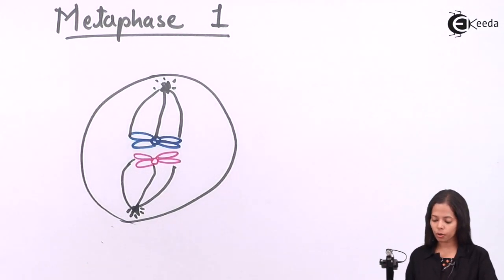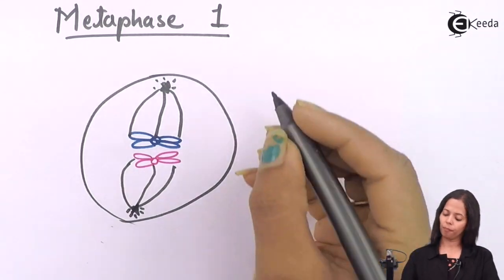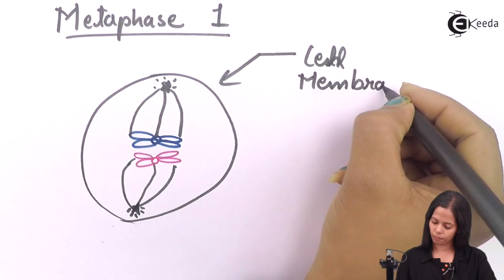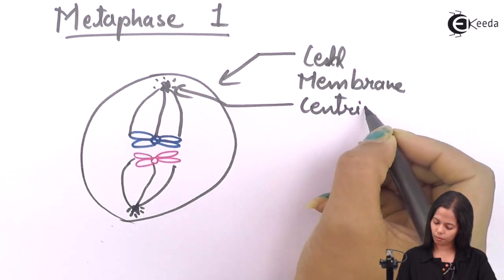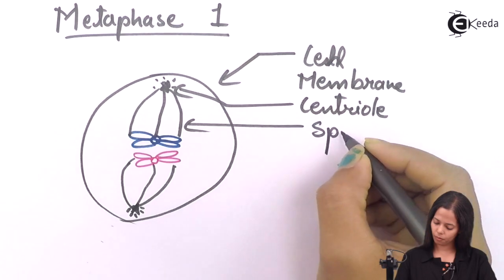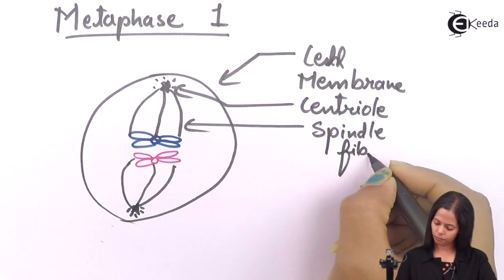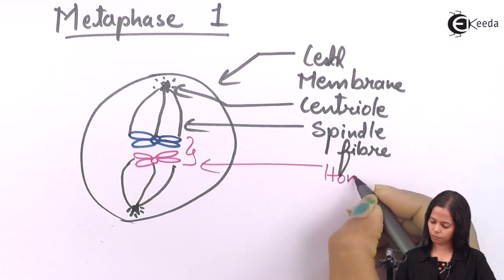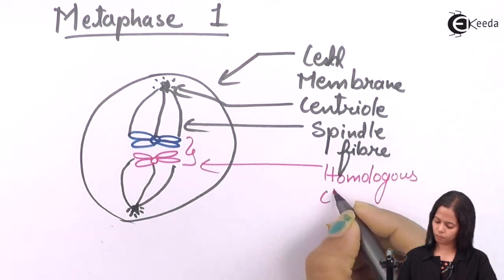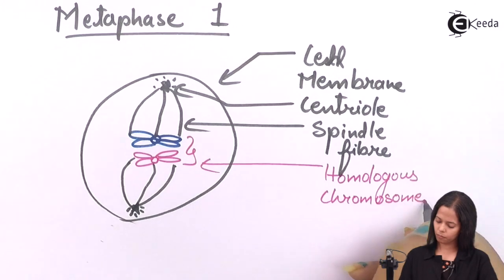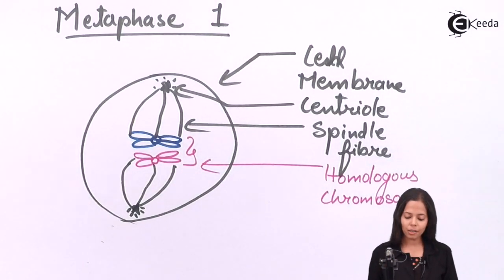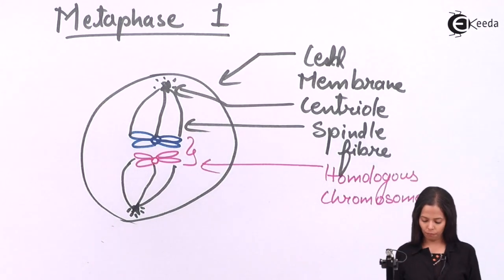Let's see what parts are present in metaphase. You can see these are the parts present in metaphase: cell membrane, centriole, and spindle fibers.